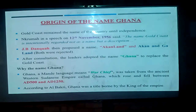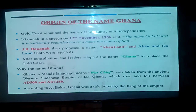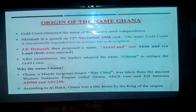This was said in a speech by Dr. Kwame Nkrumah on the 12th of November 1957, where he said, and I quote: 'The name Gold Coast is intentionally regarded not as a name, but a description.' Our land was named Gold Coast because of the abundance of gold that the British saw on the shores of the land that our people lived in. They even had areas they called Pepper Coast as well as the Slave Coast.